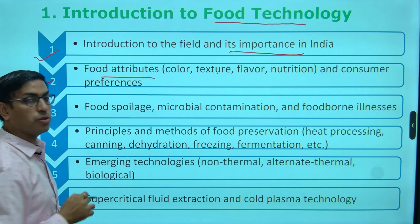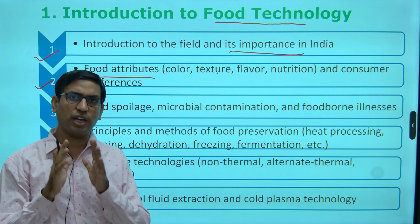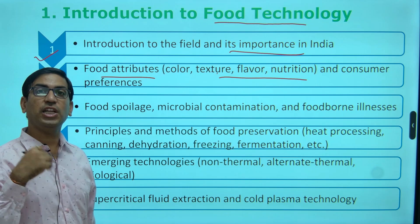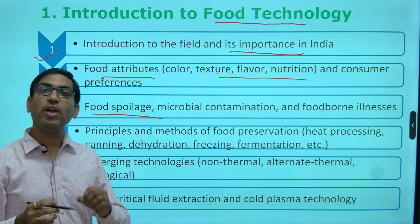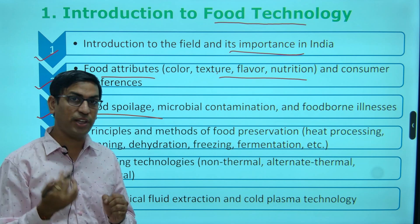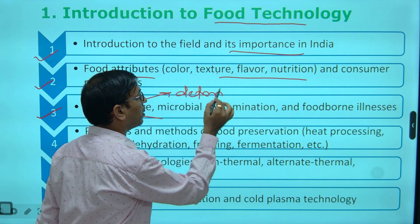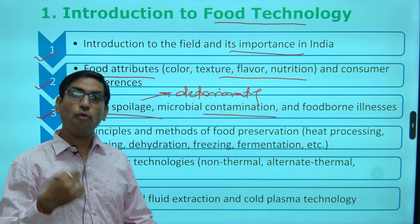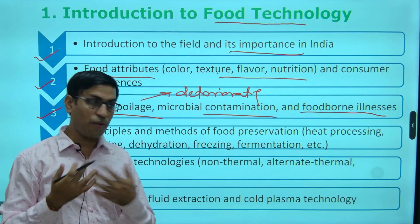Second is food attributes — the important set of parameters like color and texture, by which we can distinguish a commodity from other sources. Then food spoilage, which is the way by which food is no longer safe — it has certain deteriorating factors, with chances of contamination and food-borne illnesses that have a direct impact on our health.